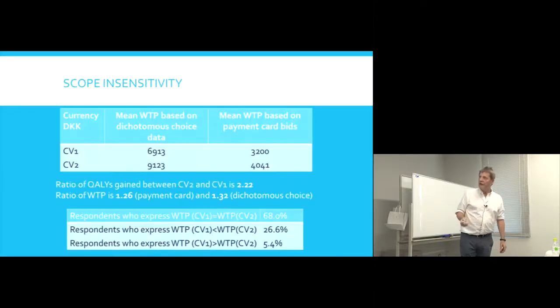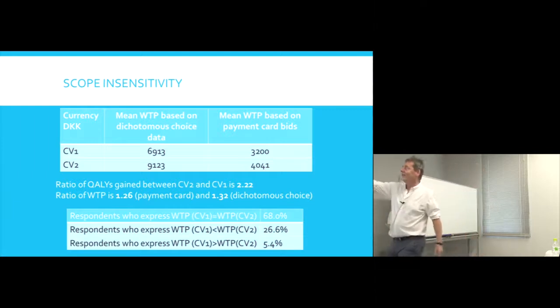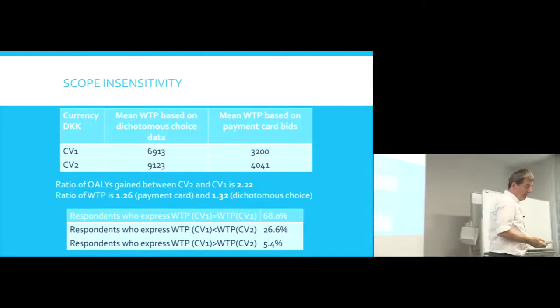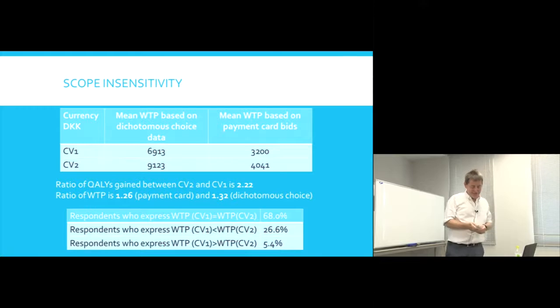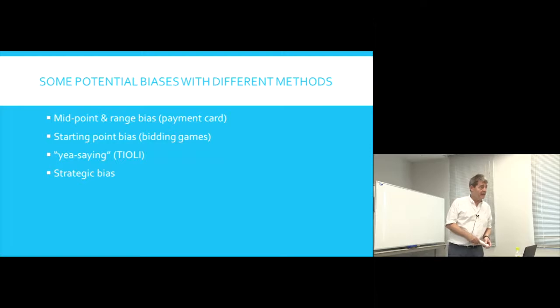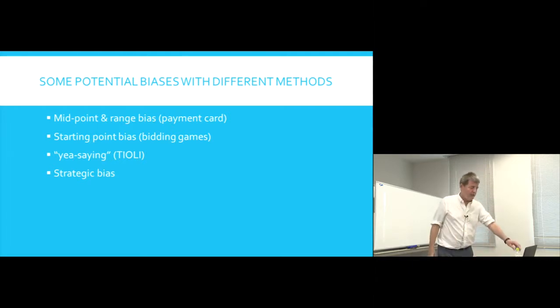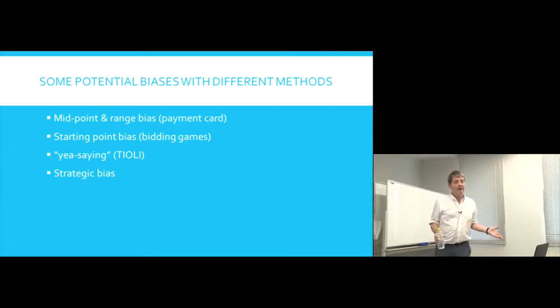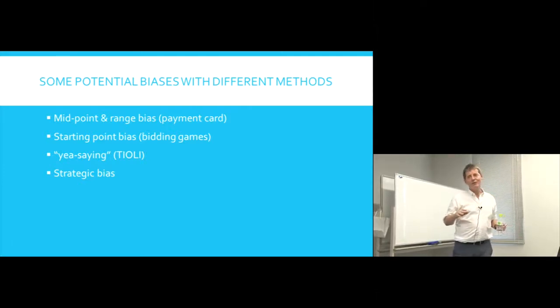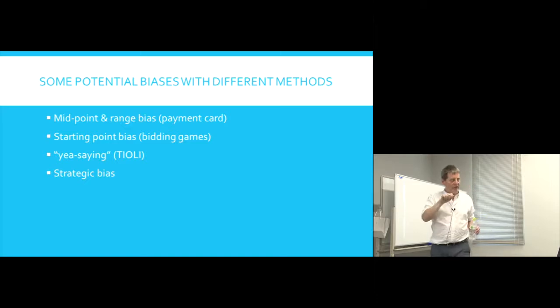Now, as I noticed, sort of mentioned in passing, the payment card produced rather different results from the dichotomous choice. And I guess we shouldn't be surprised that different methods give different answers, and it's partly because there are different potential biases with different methods. Now, the payment card is particularly subject to what's called midpoint bias and something sometimes called range bias. Midpoint bias is the description given to the phenomenon that individuals feel much more comfortable picking a value near the middle.